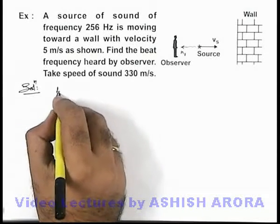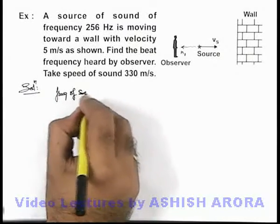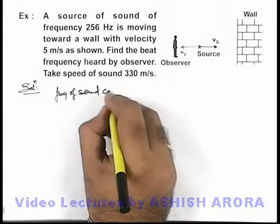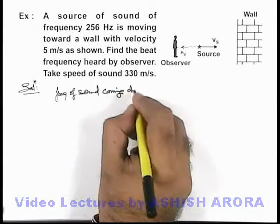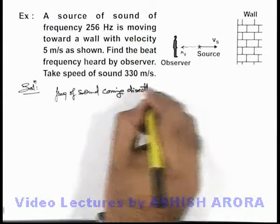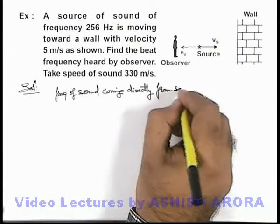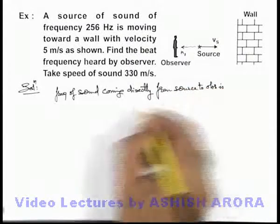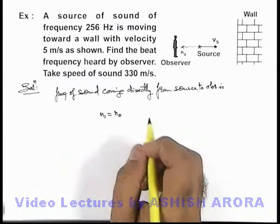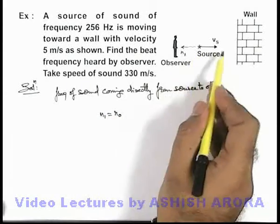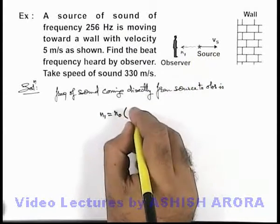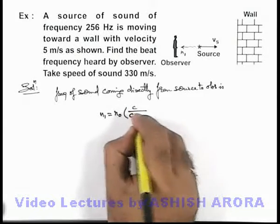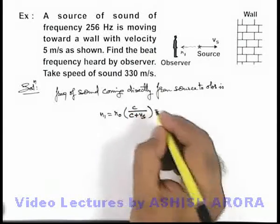The frequency of sound coming directly from source to observer—if it is n₁, this can be written as n₀. As the source is receding away, it'll be less, so we can write this as c/(c + vₛ). If we substitute the values...